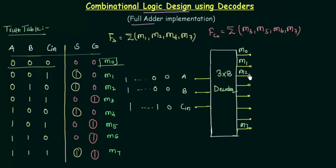So I can write M2, M3, M4, M5, M6. This implementation is very simple because we are directly having our min terms as the output. So the only thing we need is to use the OR gate and take the output. So let's see how we have to do this thing.